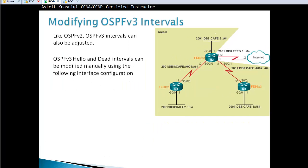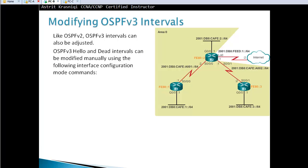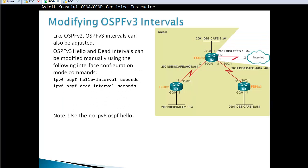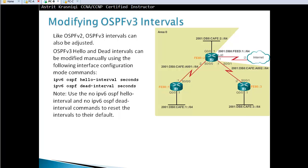OSPFv3 is very similar to version 2. Like OSPF version 2, OSPF version 3 intervals can be adjusted using interface commands: 'ipv6 ospf hello-interval [seconds]'. Use 'no ipv6 ospf hello-interval' and 'no ipv6 ospf dead-interval' to reset to defaults.